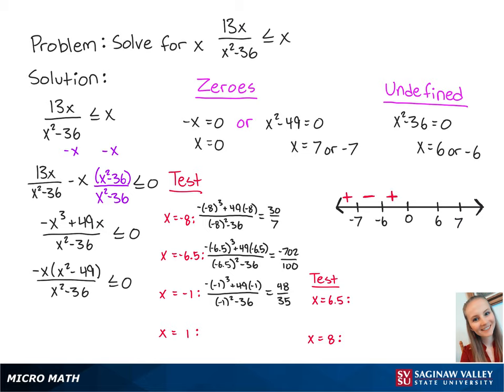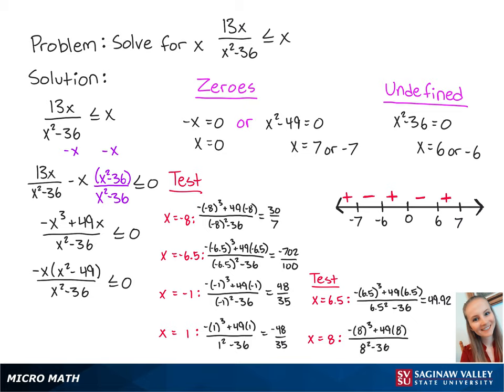For x equals 1, we have negative 48 thirty-fifths. Since this number is negative, this means that x values between 0 and 6 will make the left side of the inequality negative. For x equals 6 and a half, we have 49.92. Since this number is positive, this means that x values between 6 and 7 will make the left side of the inequality positive.